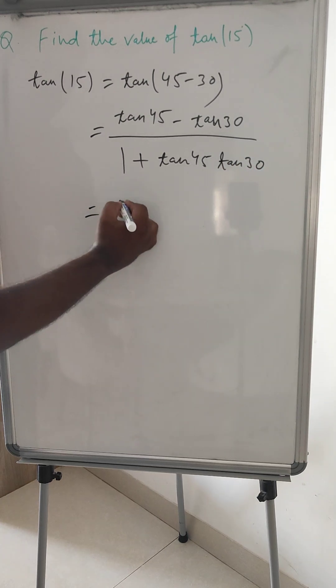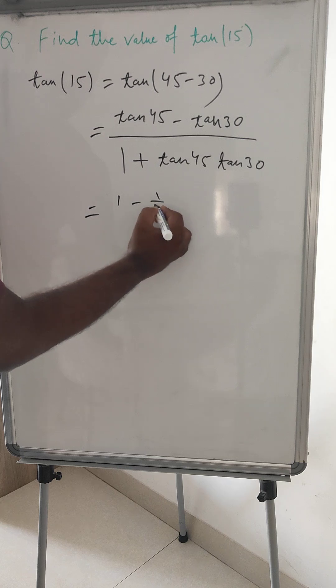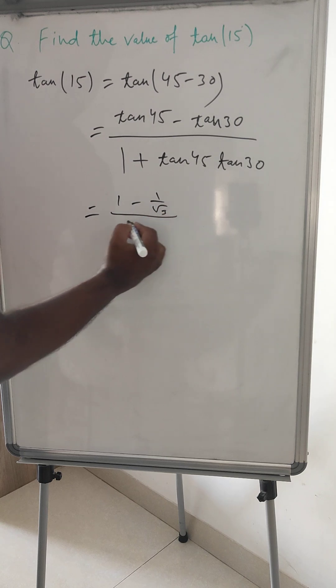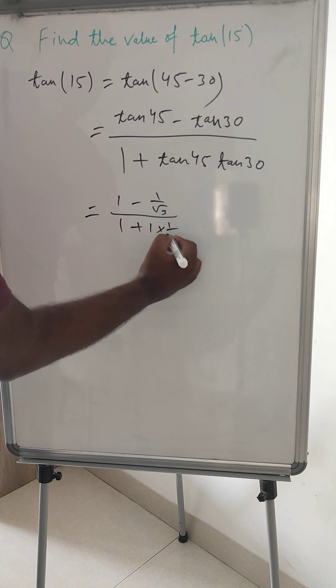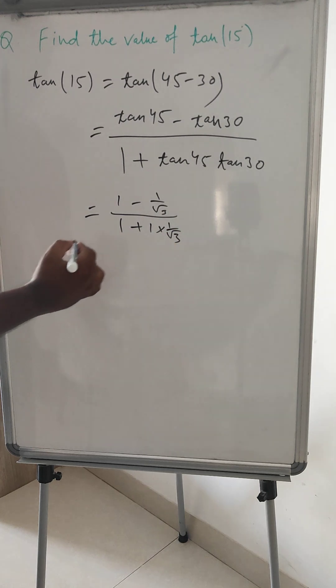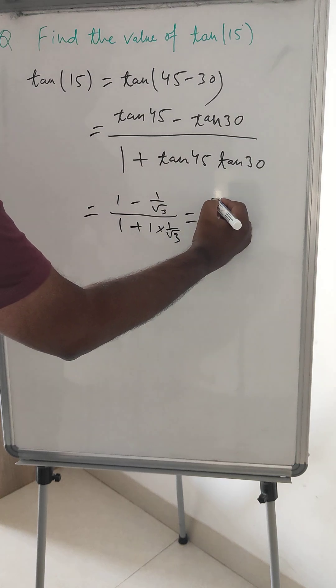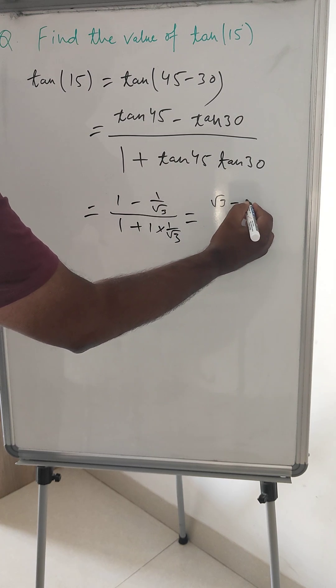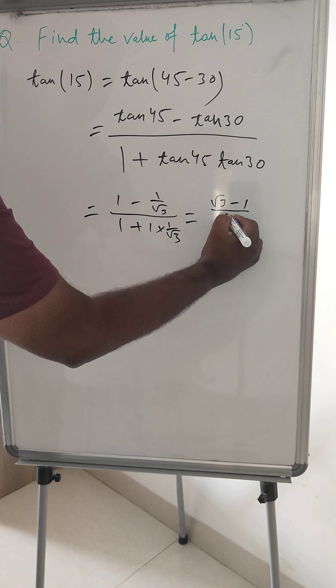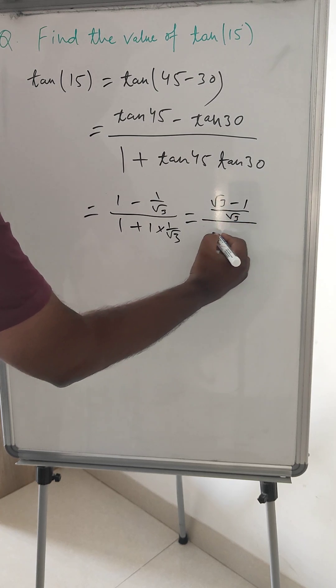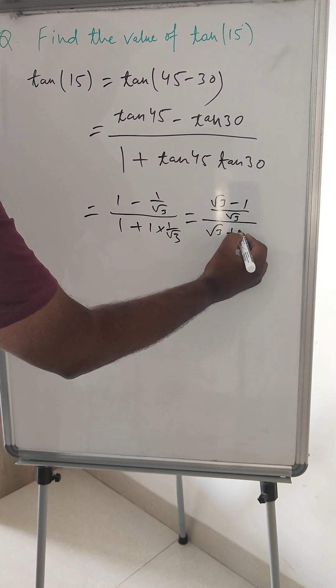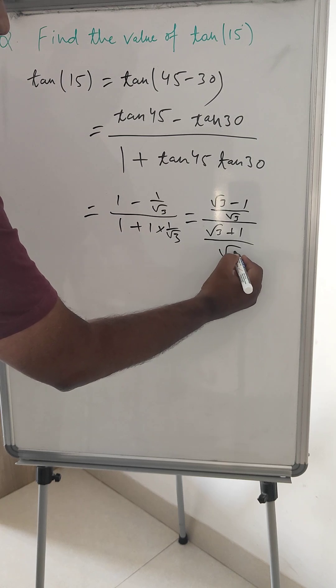So it is 1 minus 1 by root 3, 1 plus 1 into 1 by root 3. So we can write like under root 3 minus 1 under root 3 and under root 3 plus 1 under root 3.